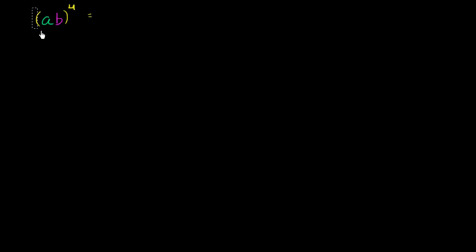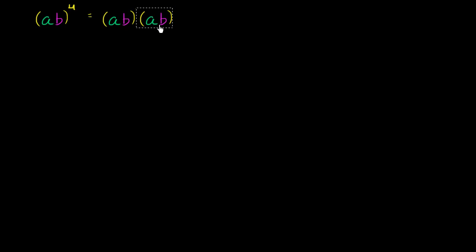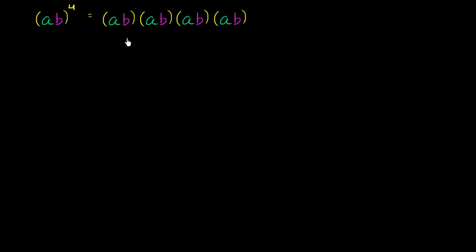Well, that's going to be equal to ab times ab times ab times ab. But when you just multiply a bunch of numbers like this, it doesn't matter what order you multiply them in. So this is equivalent to a times a times a times a, times b times b times b times b — we have four b's as well that we're multiplying together.